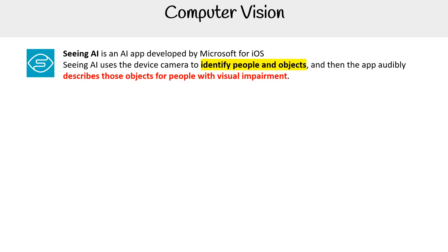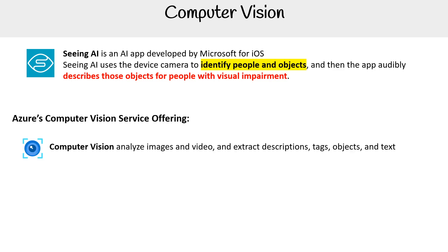For computer vision, looking at some Microsoft and Azure services, there's one called Seeing AI. It's an AI app developed by Microsoft for iOS. You use your device camera to identify people and objects, and the app audibly describes those objects for people with visual impairments. It's totally free if you have an iOS device.